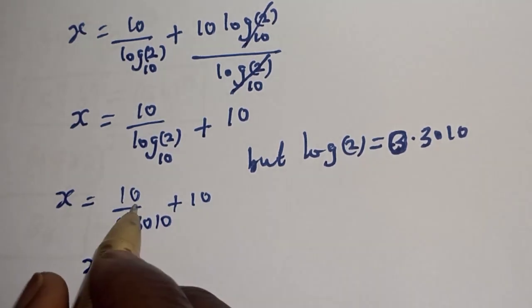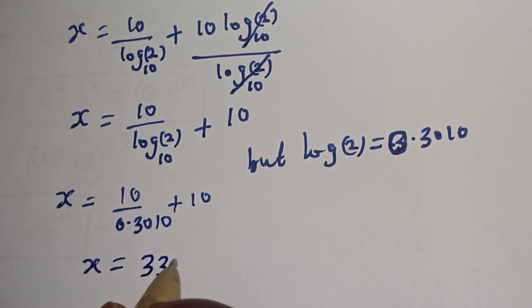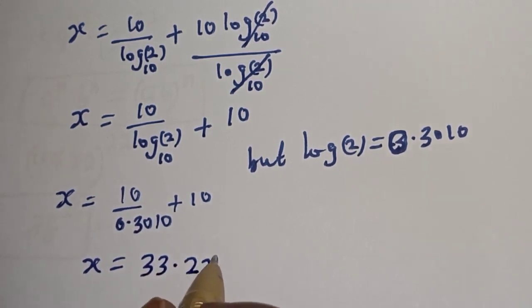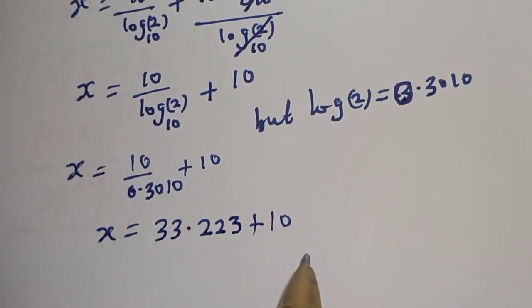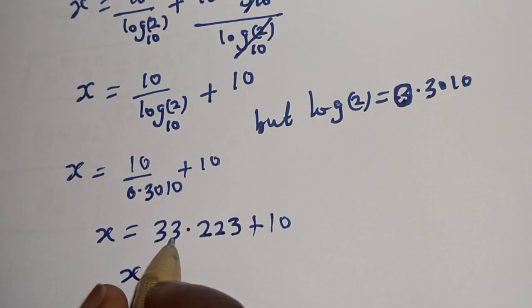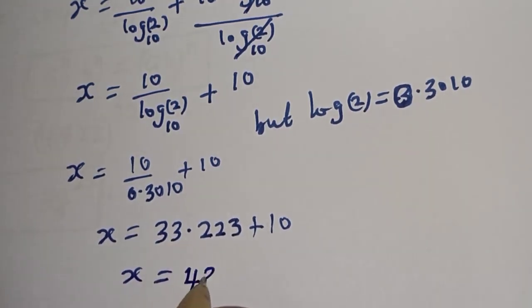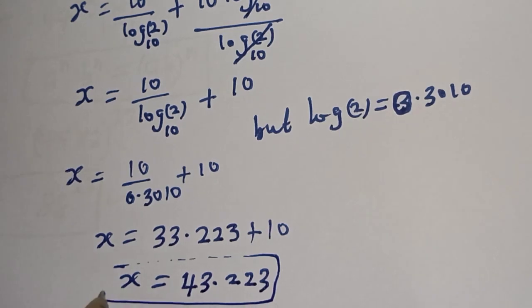Then x will be equal to 10 over 0.3010 plus 10. x is equal to 10 divided by 0.3010, that is 33.223 plus 10. Then x is equal to 43.223, and this is the final answer.